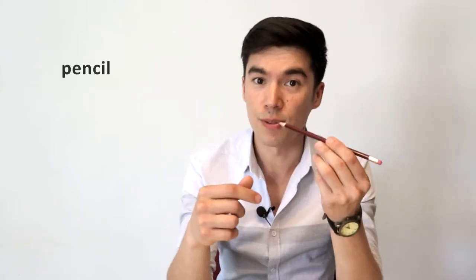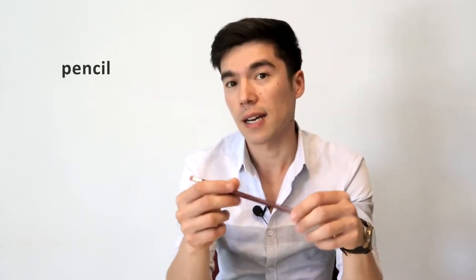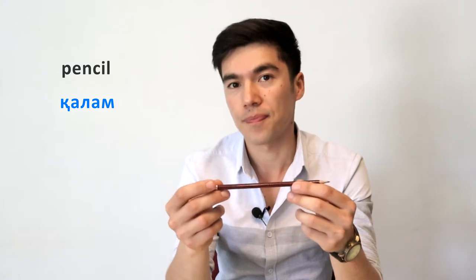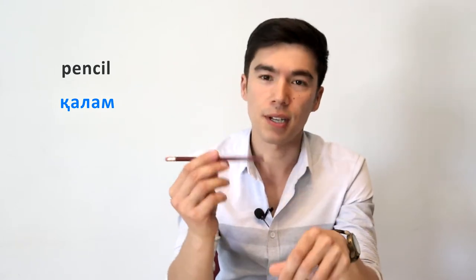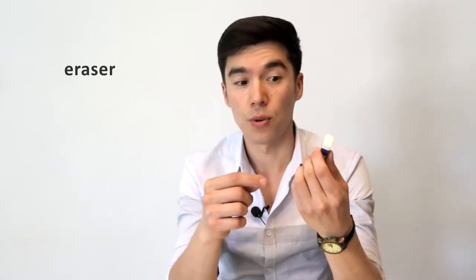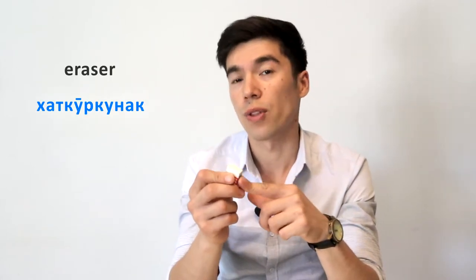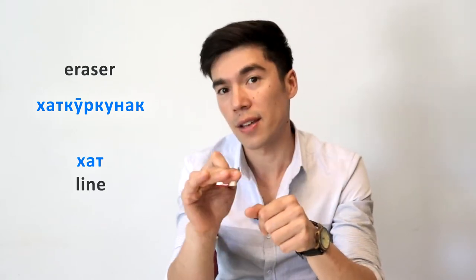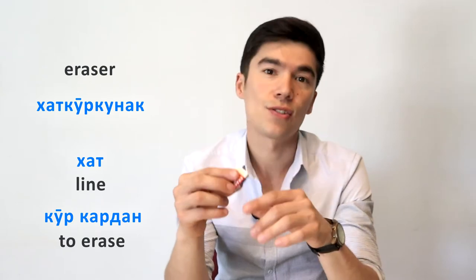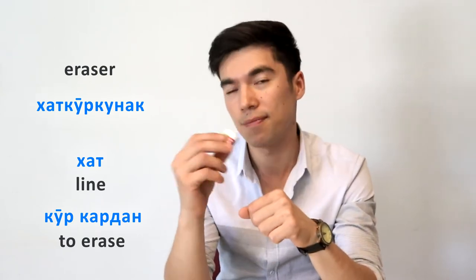Next, 'pencil'. In Tajik, we say ҚАЛАМ. And next, 'rubber' or 'eraser'. This is ХАТ КӮРКУНАК. ХАТ means a line, and КӮРКУНАК means to erase. So this one is ХАТ КӮРКУНАК.